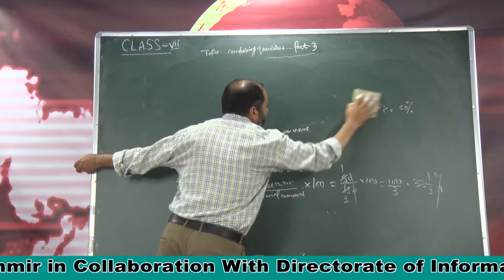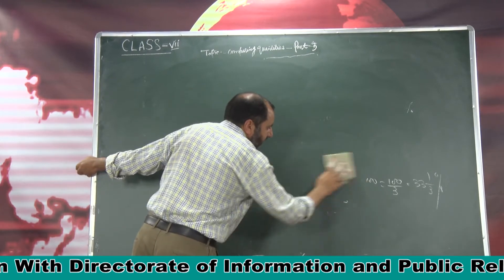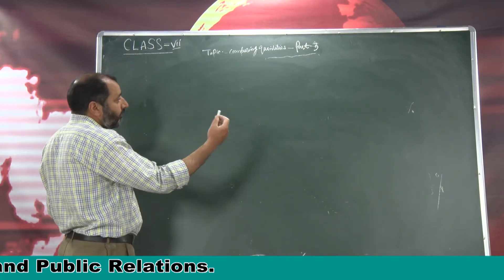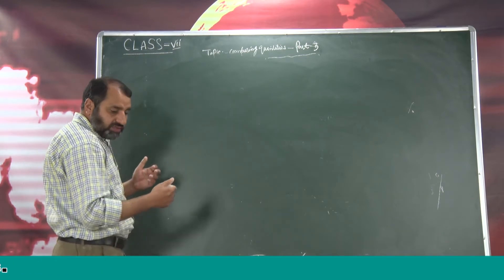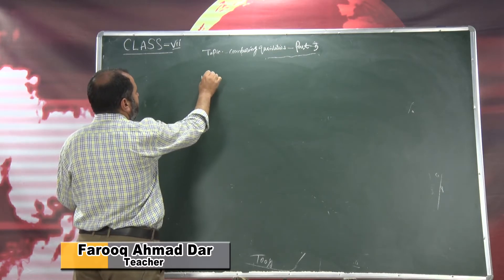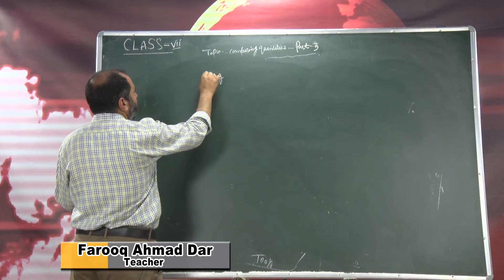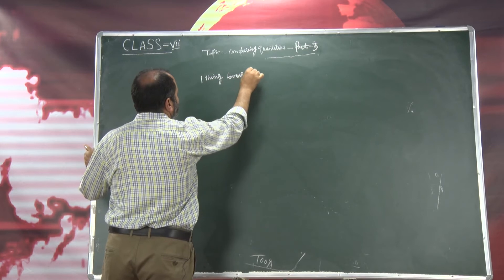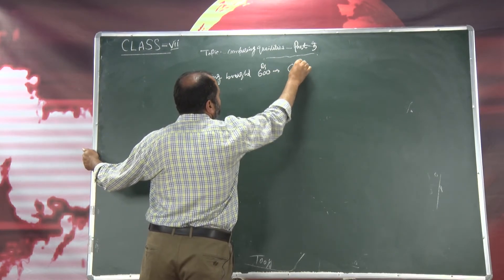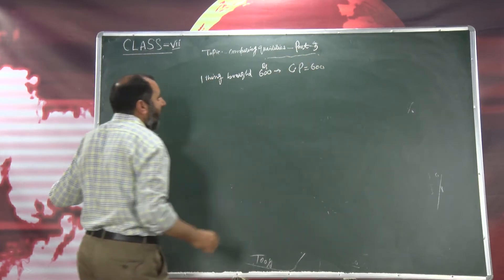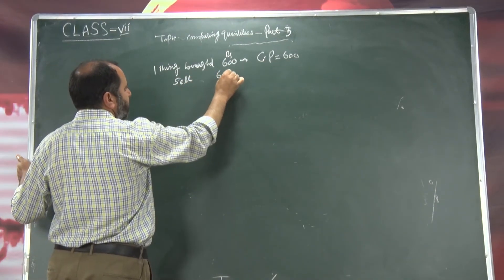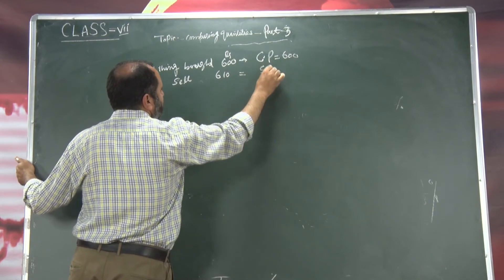Let us move towards another sub topic, that is profit and loss. Dear students, ab hum compare karte hai quantities ko profit or loss ke zariye — yani prices related ke zariye. Joh koi bhi cheez hum kharid lete hai, hum buy karti hai — maslan koi bhi cheez hum ne bought kiya hai 600 rupees mein. Ye price ka related hai, 600 rupees — it means isko hum math mein kehte hai CP, cost price. Cost price means 600. Ab isi cheez ko hum ne sell kiya hai, sell means bheej diya hai, hum ne isko 610 mein bheej diya hai. So 610 means SP — SP means selling price, 610.